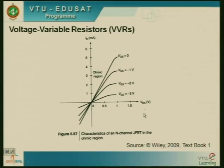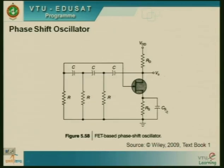Moving on, the next application is the phase shift oscillator. Before discussing phase shift, let us understand what oscillators are. An oscillator essentially is something which gives you a repetitive waveform. If it gives a sinusoidal signal, we call it a sinusoidal oscillator. If it gives a square wave, we call it a square wave generator. Anything which generates a repetitive waveform is called an oscillator.